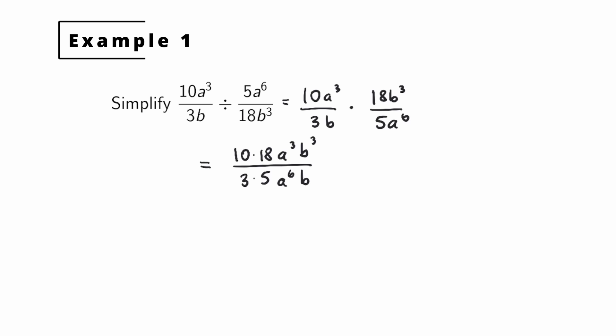First, we can cancel out from the 10: we have a 10 in the numerator and a 5 in the denominator, so that cancels out the factor of 5, leaving us with a 2 in the numerator and a 1 in the denominator. We can do the same with the 18 and the 3: 18 divided by 3 leaves a 6 in the numerator and a 1 in the denominator. For the variables, we have a cubed in the numerator and a to the sixth in the denominator, so we cancel out the a cubed, leaving a cubed in the denominator. Last, we have b cubed in the numerator and b in the denominator, leaving b squared in the numerator. So what we have left is 2 times 6, which is 12b squared over a cubed.